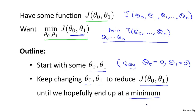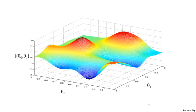Let's see in pictures what gradient descent does. Let's say you're trying to minimize this function. Notice the axes: theta_0 and theta_1 are on the horizontal axis and J is the vertical axis, so the height of the surface shows J, and we want to minimize this function. We're going to start off with theta_0, theta_1 at some point — imagine picking some value for theta_0, theta_1, which corresponds to starting at some point on the surface of this function.